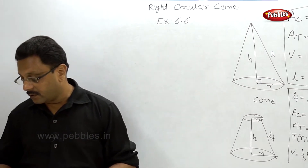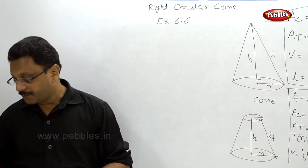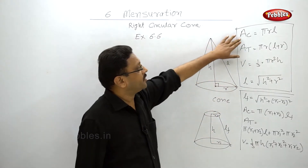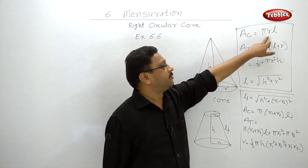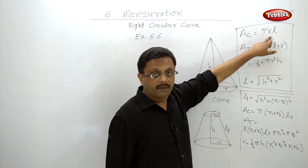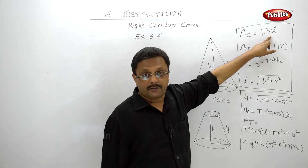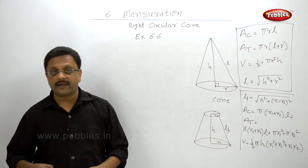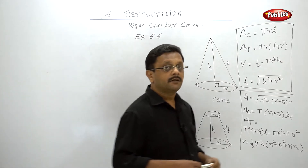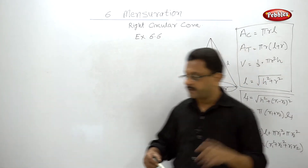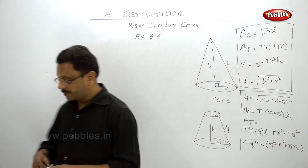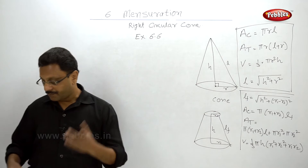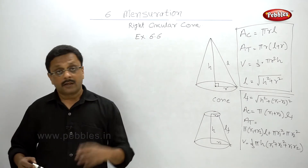The diameter is given, the curved surface area is given, and you have to find out the slant height. Remember, diameter is given, not radius — so radius will be half the diameter. Diameter is 70 cm, so the radius is 35 centimeters. Don't forget that, otherwise you will miss the answer. This is a direct substitution of formula, very easy.